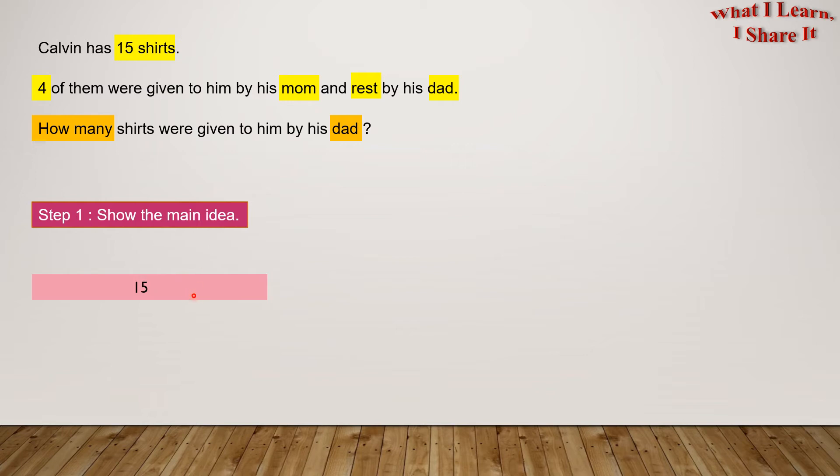So here in this pink block we have all of Calvin's 15 shirts. Then we know that four of them were given to him by his mom and the rest of them were given to him by his dad.